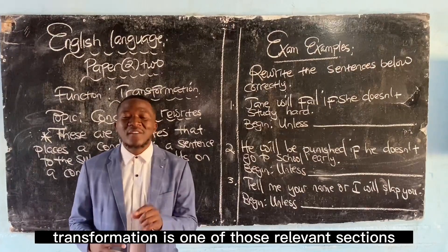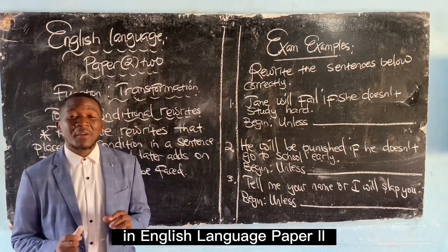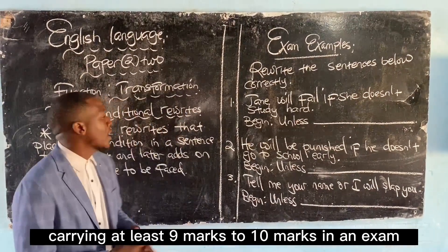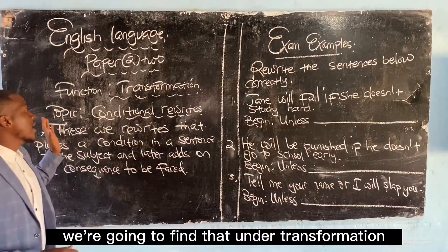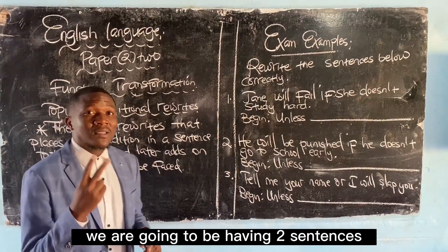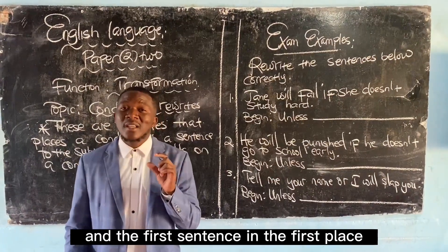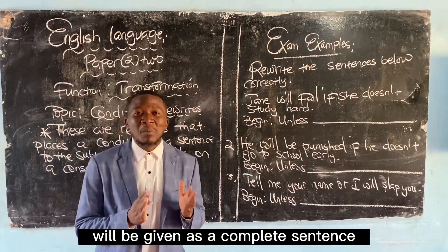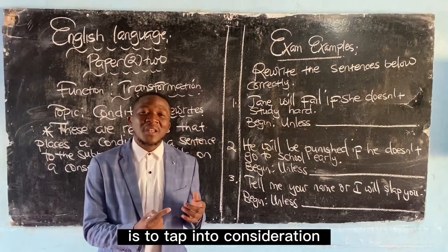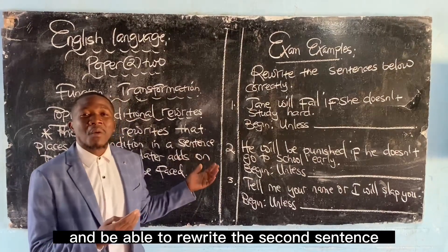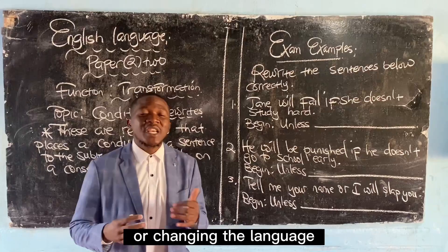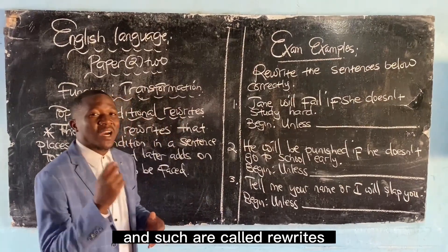Transformation is one of those relevant sections in English Language Paper 2, carrying at least 9 to 10 marks in an exam. Under transformation, we should understand that we're going to have two sentences, and the first sentence will be given as a complete sentence. What will be required of us is to rewrite the second sentence by either maintaining the meaning or changing the language — and such are called rewrites.